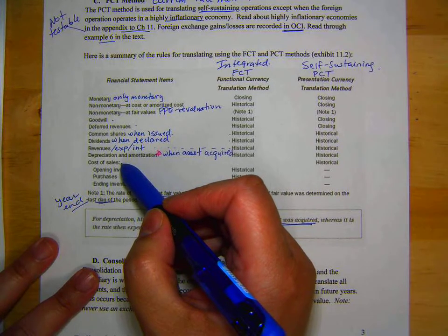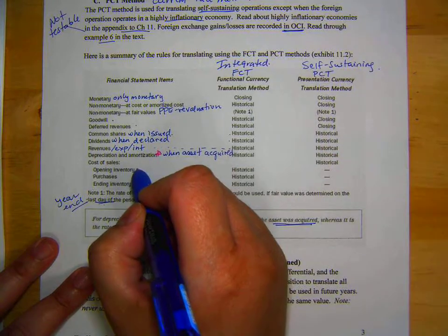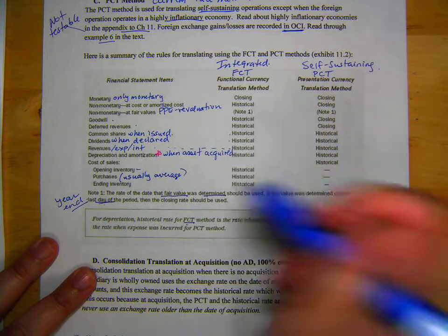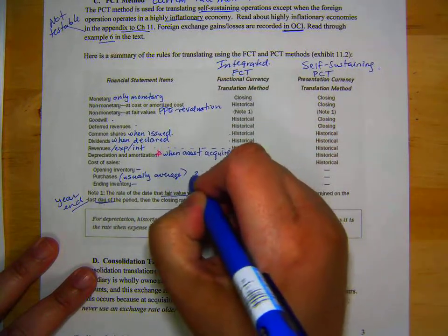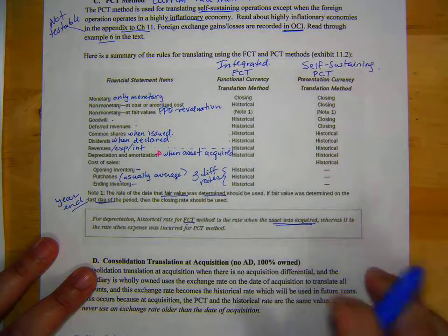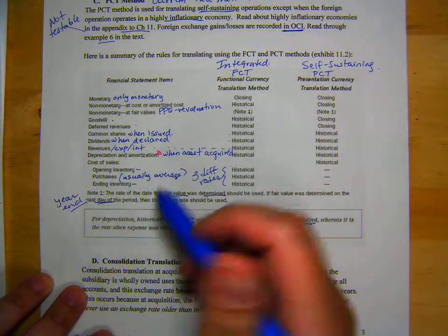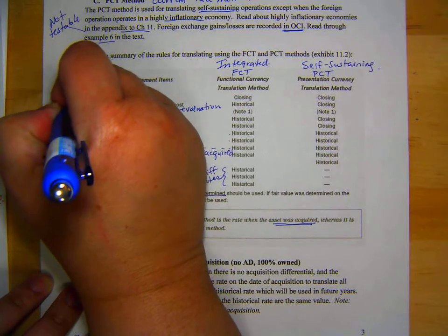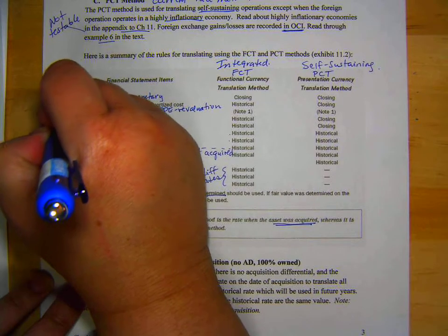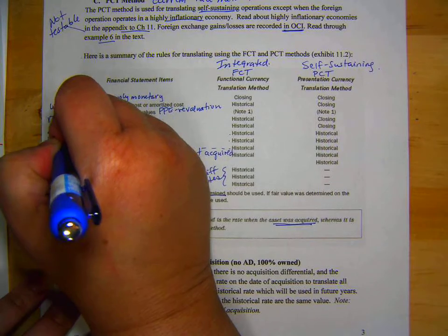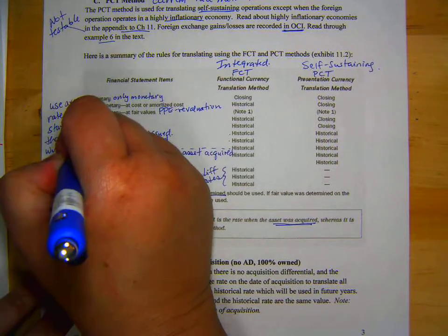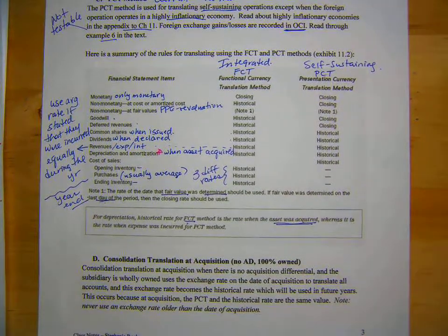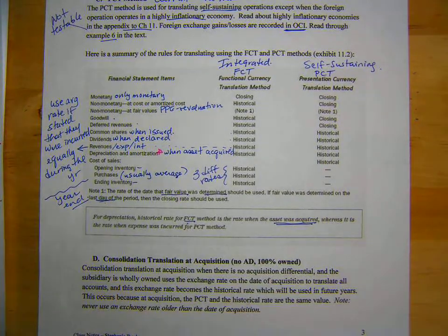Now, cost of sales. We're going to have to do a little calculation. We're going to have one rate for opening inventory, one rate for purchases, and it's usually average, and one for ending inventory, so those are all three different rates. Now, the last thing I want to talk about is this guy right here. Revenues, expenses, interest. Use the average rate if it's stated that they were incurred equally during the year.